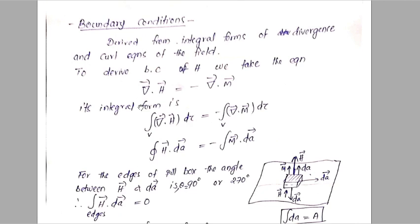Normally, boundary conditions are derived by the integral form of curl and divergence equations. Our first task is to find the integral form of the divergence equation for H. From the previous class, we have del dot H equal to minus del dot M, where M is the magnetization vector.